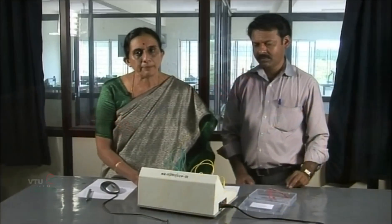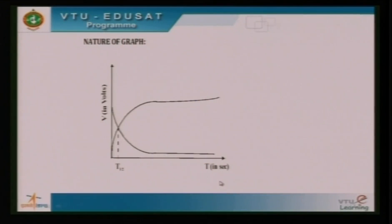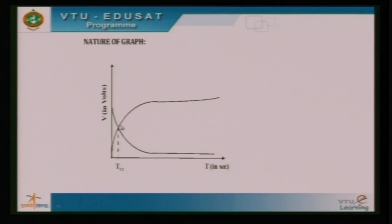We are now done with the experimental part. We calculate the dielectric constant by plotting a graph of voltmeter readings on the y-axis and time on the x-axis. The graph shows two exponential curves which intersect at a particular point called the half-time. Half-time is the time during which the quantity of charge on the capacitor gets reduced to half its initial value. This value is noted from the graph.